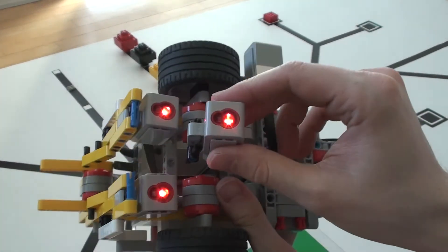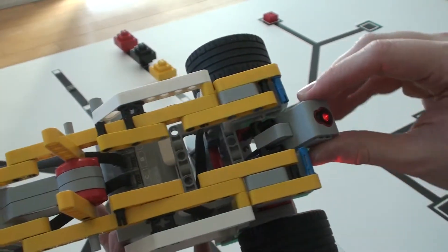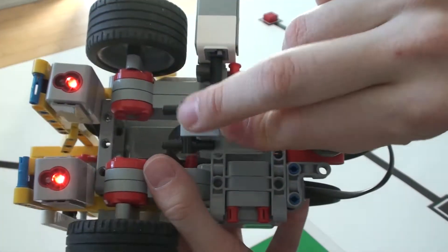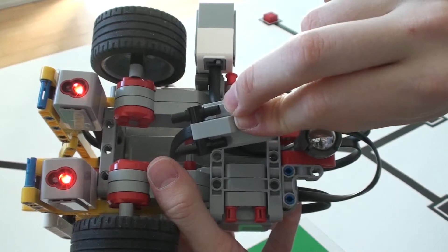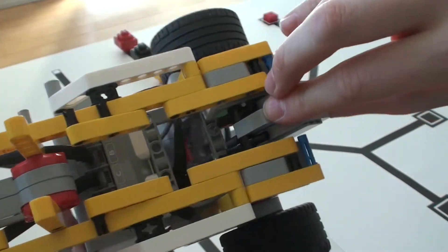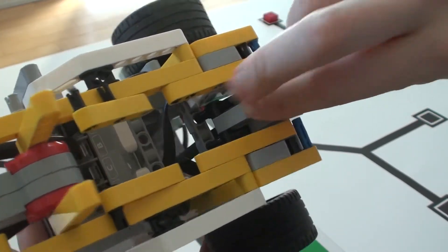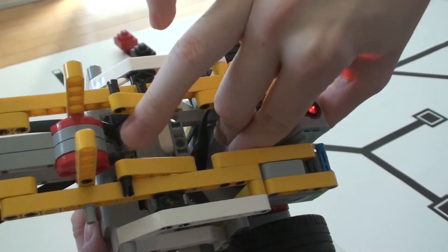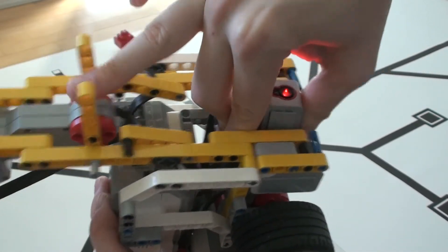The forward facing sensor connects to port number three. It is quite simple with just these two connectors right here going into the holes here, although attaching it requires a little more force.